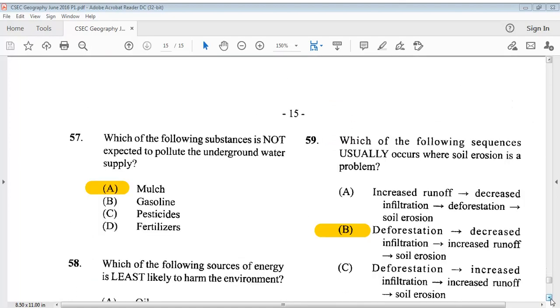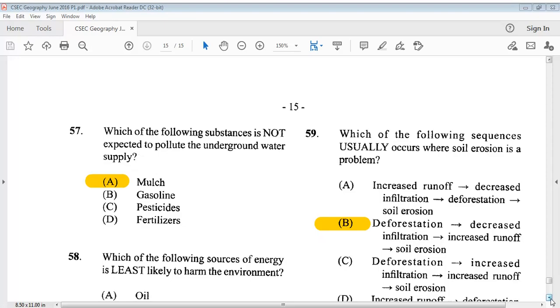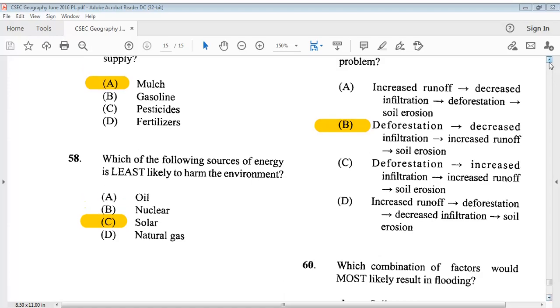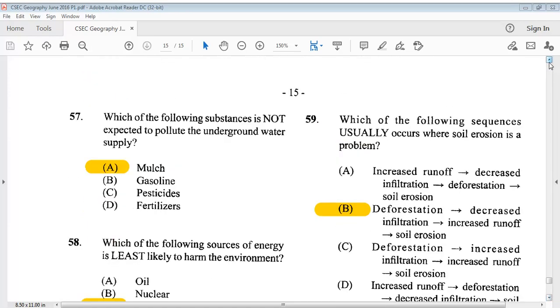Question 57: Which of the following substances is not expected to pollute the underground water supply? The answer is A, mulch. Question 58: Which of the following sources of energy is least likely to harm the environment? The answer is C, solar. Question 59: Which of the following sequences usually occurs where soil erosion is a problem? The answer is B, deforestation, then decreased infiltration, next increased runoff, and then soil erosion.